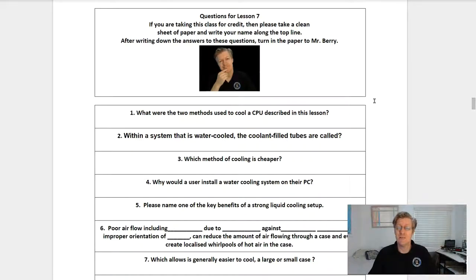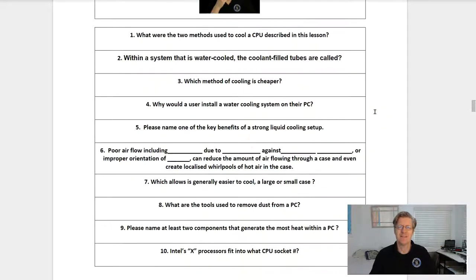Questions for lesson number seven. If you are taking this class for credit, then please take a clean sheet of paper and write your name along the top line. After writing down the answers to these questions, please turn them in to Mr. Barry. Question number one. What were the two methods used to cool a CPU described in this lesson?